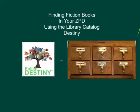The Skyview Destiny Library Catalog is made by the Follett Company and can be searched by keyword, title, author, subject, and series. Today we're going to search for fiction books in your ZPD.